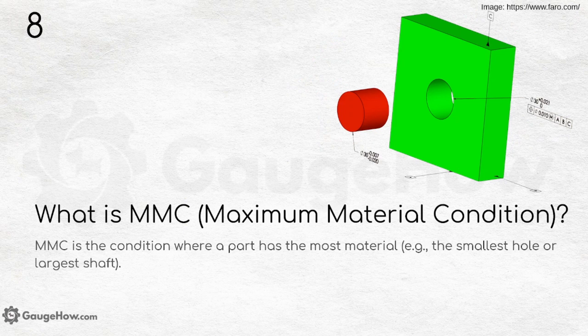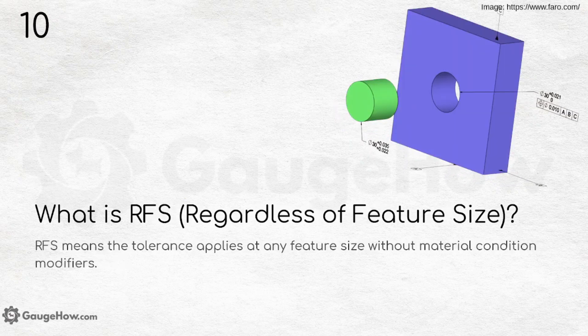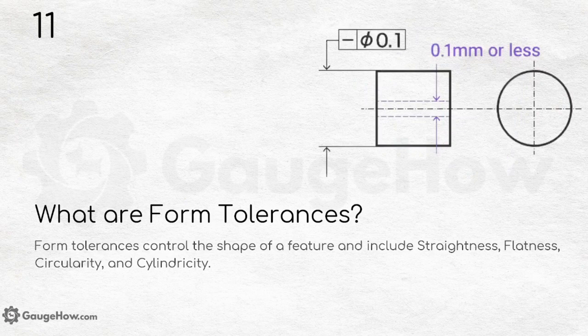What is LMC — Least Material Condition? LMC is the condition where a part has the least material; for example, the largest hole or the smallest shaft. Comparing both figures and definitions will help you understand these better. What is RFS — Regardless of Feature Size? RFS means the tolerance applies at any feature size without material condition modifiers.